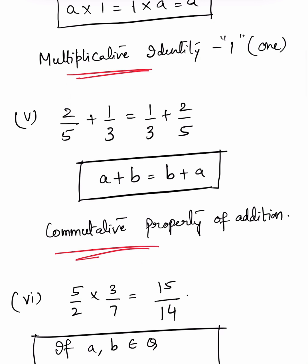2/5 + 1/3 = 1/3 + 2/5. This is in the form of a + b = b + a. If two numbers are added, the order of addition does not matter and the answer remains the same. Whether 2/5 is added to 1/3 or 1/3 is added to 2/5 does not matter. So, this is the commutative property of addition.